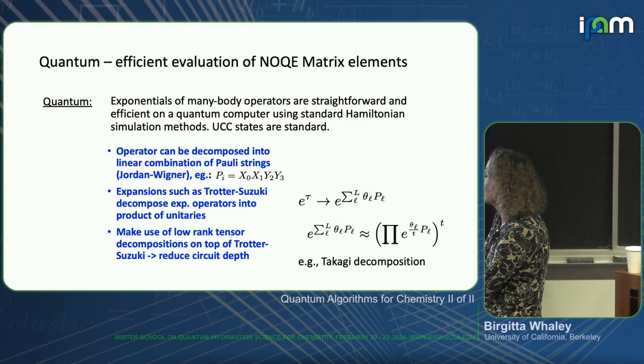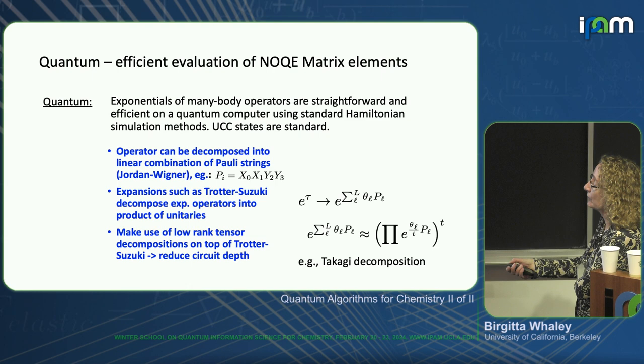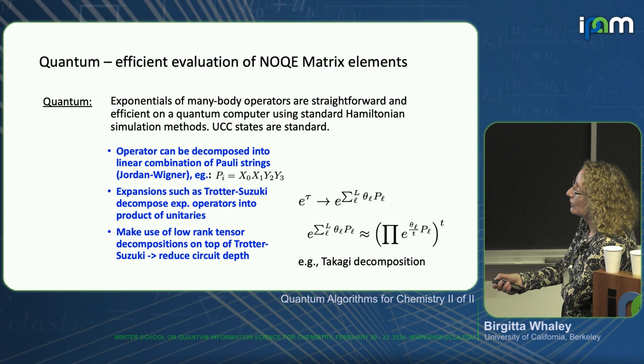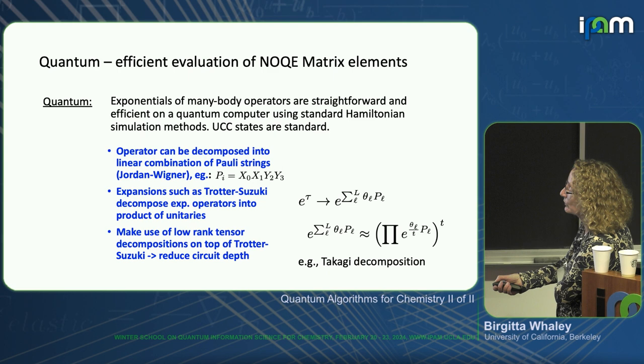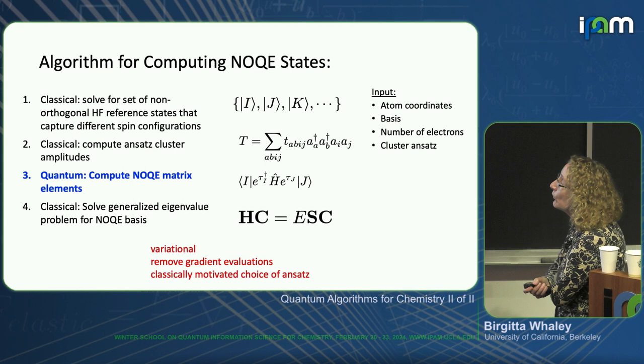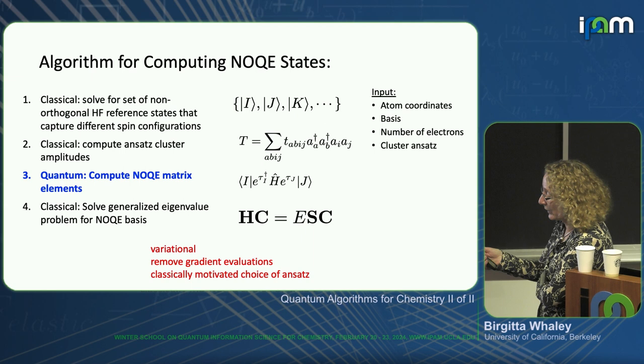One can make additional tensor decompositions to reduce the depth of the circuit — something developed over the last four or five years for implementing Trotter exponentiation for Hamiltonians. Putting these two things together gives an algorithm for computing non-orthogonal states on a quantum machine: the Non-Orthogonal Quantum Eigensolver.